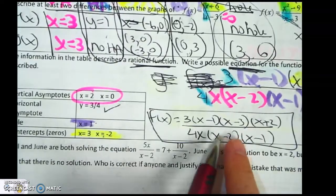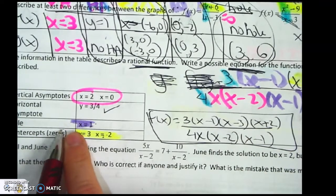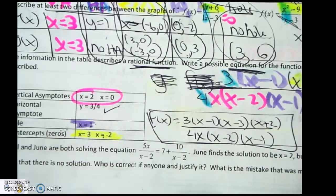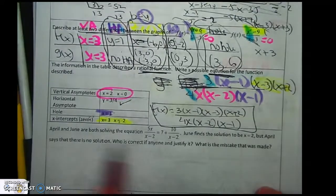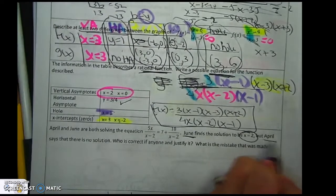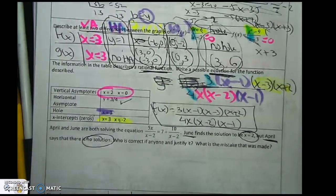So normally I say, okay, figure this stuff out. But this time I'm saying, here's it figured out. Give me the function. All right. So they're both solving this. June says the answer's 2, but April says no solution. Who's correct?